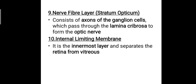To recap, the 10 layers of the retina are: the pigment epithelial layer, the layer of rods and cones, the external limiting membrane, the outer nuclear layer, the outer plexiform layer, the inner nuclear layer, the inner plexiform layer, the ganglionic cell layer, the nerve fiber layer, and the internal limiting membrane. These are the 10 layers of the retina in microscopic view. Thank you.